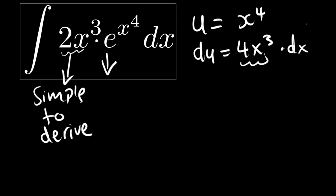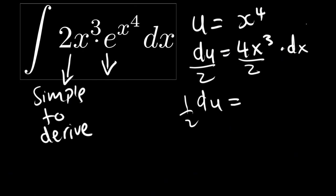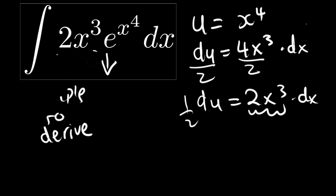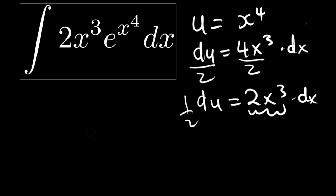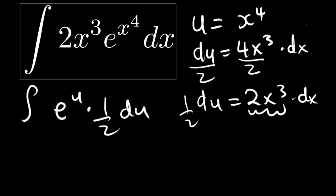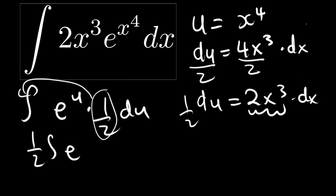As we said, du must appear in the function, but four x cubed is not directly there — we have two x cubed. So we divide both sides by two to get one-half du equals two x cubed dx. Now we have two x cubed in the equation. Substituting, e to the power x to the power four becomes e to the power u, with one-half taken outside the integral.